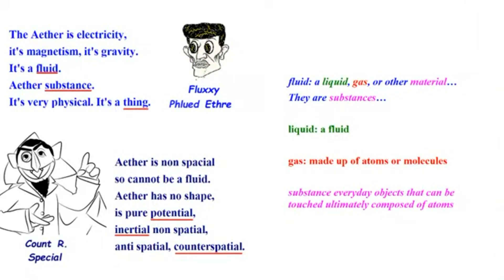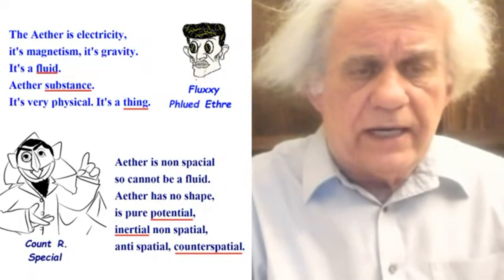A fluid is a thing, a material — a substance. So far this guy's on the right track. But what is a fluid? All substances and materials are made up of atoms and molecules. So the question is whether the ether is made up of molecules and atoms. If he says it's a fluid, he's saying it's made out of atoms and/or molecules. If he says no to that, then it can't be a fluid, because that's what a fluid is.